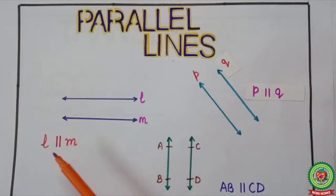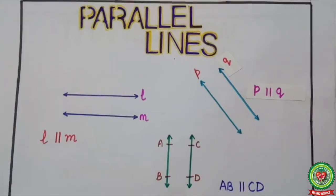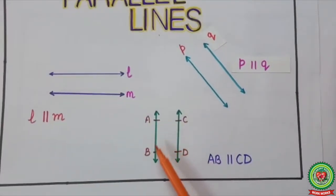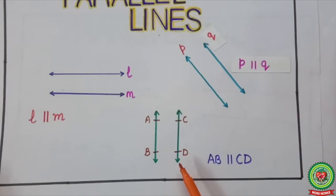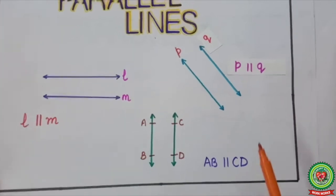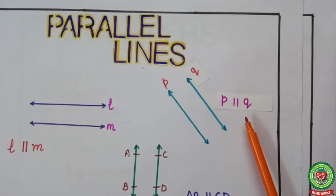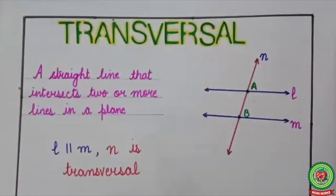This symbol represents the symbol of parallel lines. Similarly, line AB and CD are parallel to each other, therefore AB is parallel to CD. And here, p is parallel to q.